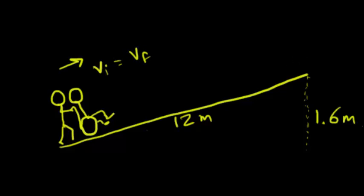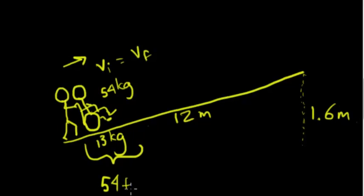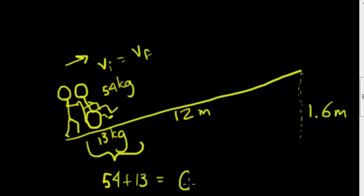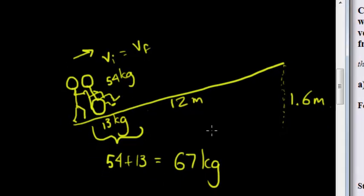What else do we have? We have the wheelchair is 13 kilograms, and his friend sitting in the wheelchair is 54 kilograms. So in total, he is pushing up a mass of 54 plus 13, that makes it 67 kilograms total mass he is pushing up this ramp.